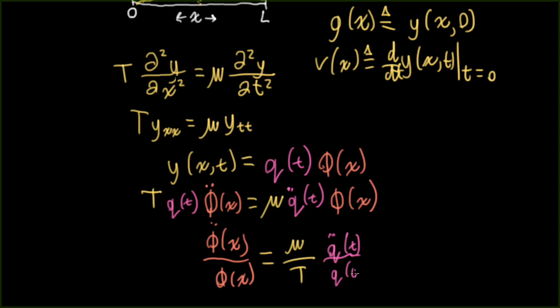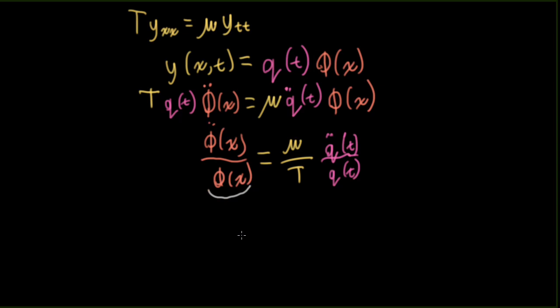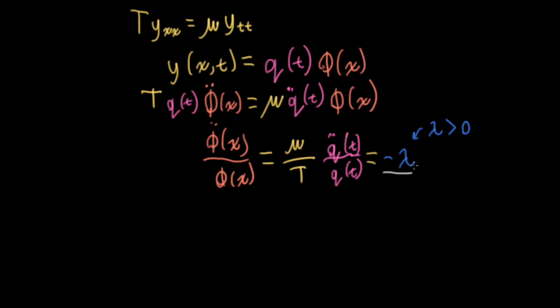Here's the key observation: the thing on the left has an x in it and is constant with respect to t; the thing on the right has a t in it and is constant with respect to x. But they are equal to each other, so this whole thing must equal some constant we'll call minus lambda, where lambda is greater than zero. I'm cheating a little bit — I know ahead of time this constant is negative — but if you work at this more and play around with different possibilities, you'll see this turns out to be the only possibility. This minus lambda is called the constant of separation.